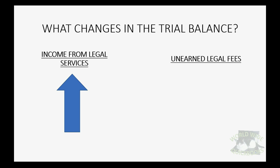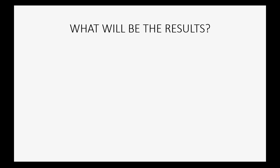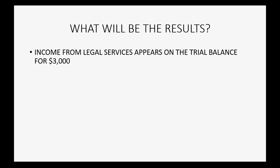But what would decrease is unearned legal fees, because if we perform the service and earned some, then the amount unearned goes down. And the customer's balance in the customer's records would also change. So income from legal services will appear on the trial balance for the first time as $3,000, and unearned income will decrease. Unearned legal fees will go down to $22,000 because we have now earned $3,000.